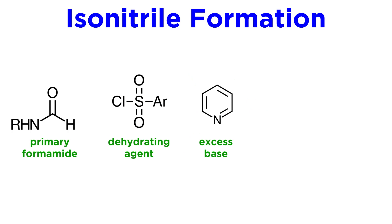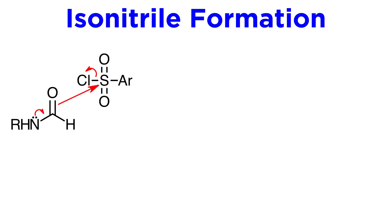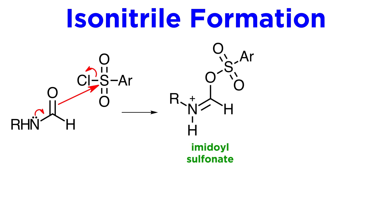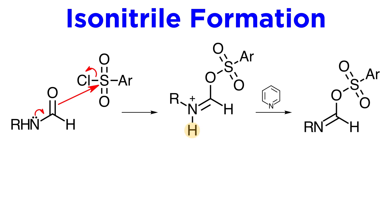When reacting one equivalent of a primary formamide with a good dehydrating agent in the presence of excess base, something interesting happens. First, the dehydrating agent — let's say an aryl sulfonyl chloride — reacts at the more basic center of the amide, the carbonyl oxygen, and forms an imidoyl sulfonate. The nitrogen that initiated this step with its lone pair now has a positive charge, so pyridine or a similar amine will act as a proton sponge to neutralize the nitrogen, which is why this reaction requires a primary formamide rather than secondary, so that a proton is present for this step to occur.